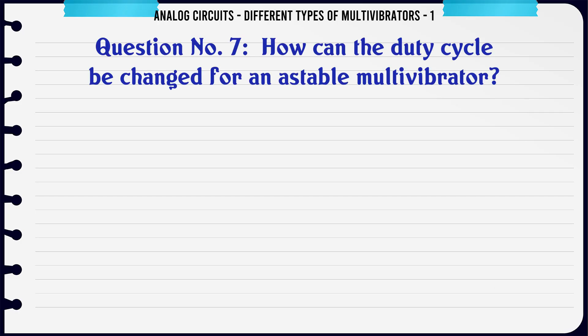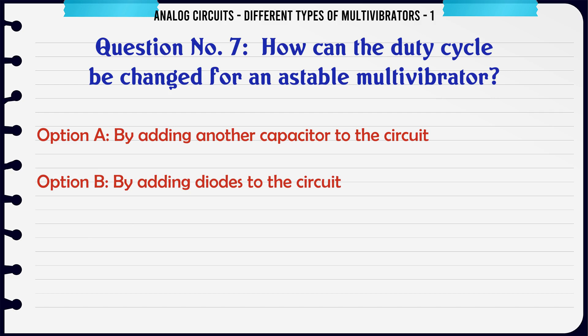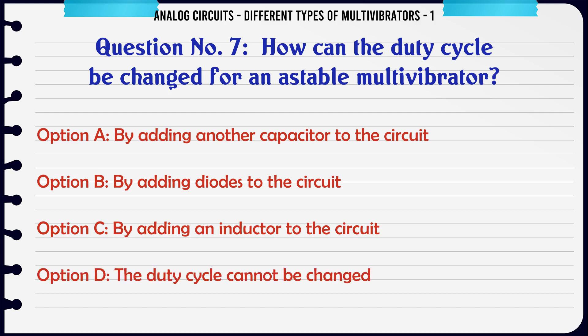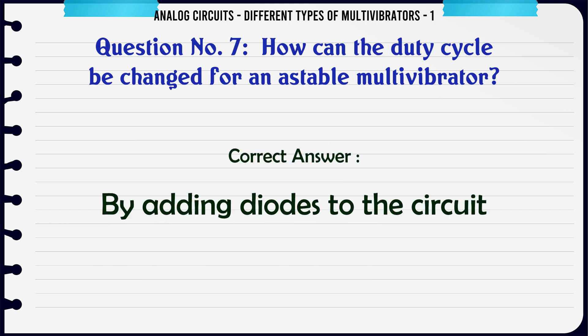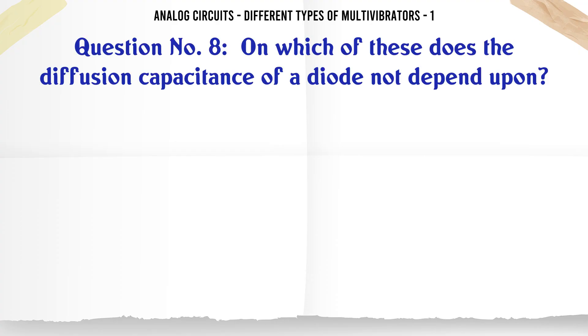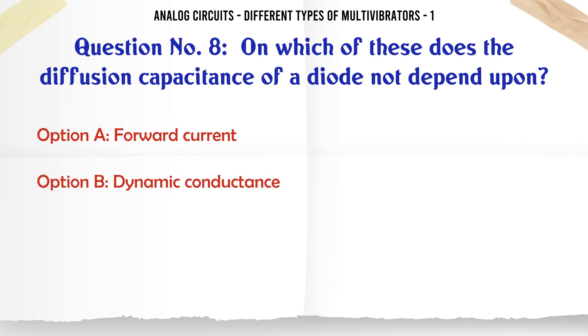How can the duty cycle be changed for an astable multivibrator? A: By adding another capacitor to the circuit. B: By adding diodes to the circuit. C: By adding an inductor to the circuit. D: The duty cycle cannot be changed. The correct answer is: by adding diodes to the circuit.